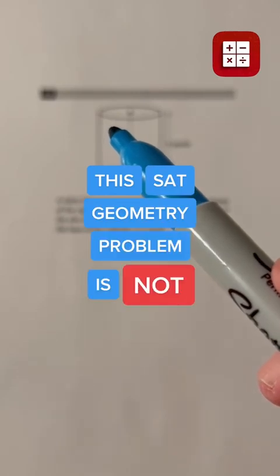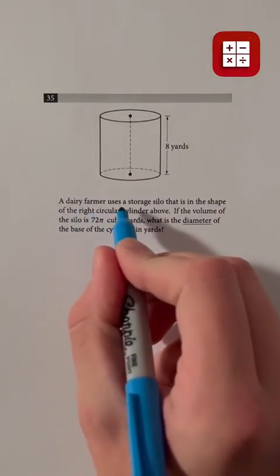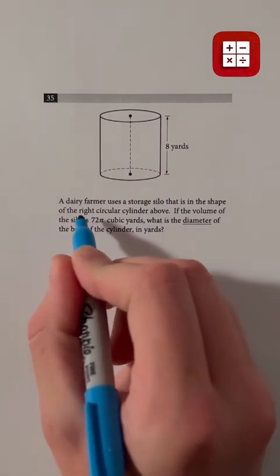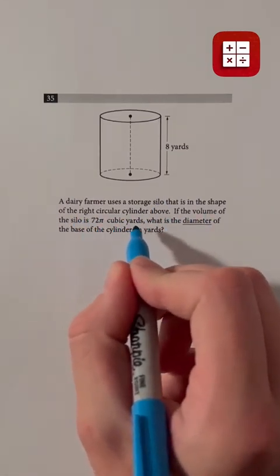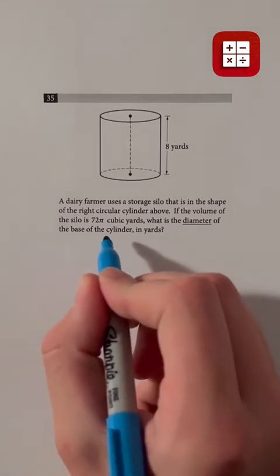This SAT geometry problem is not that bad. A dairy farmer uses a storage silo that is in the shape of the right circular cylinder above. If the volume of the silo is 72π cubic yards, what is the diameter of the base of the cylinder in yards?